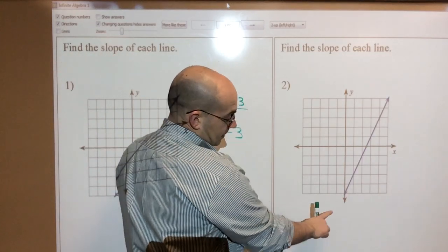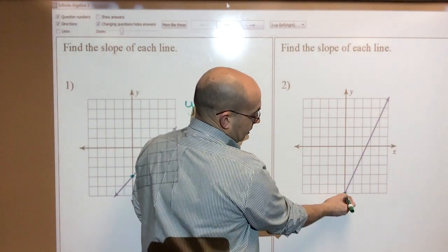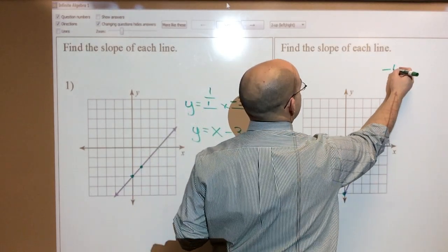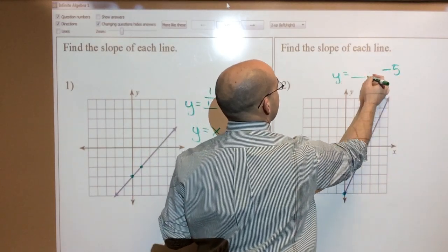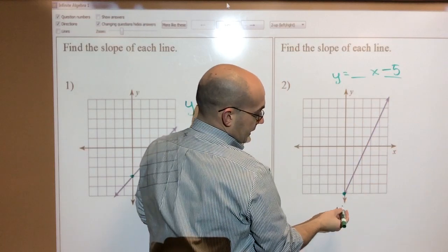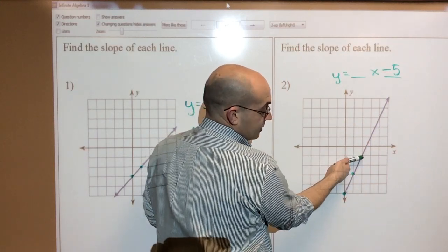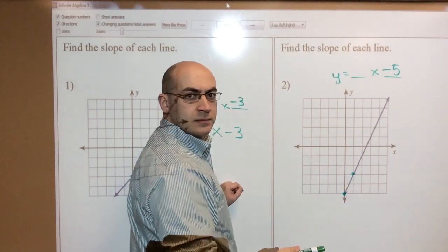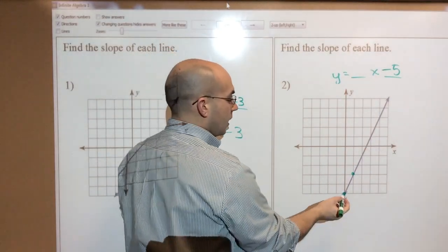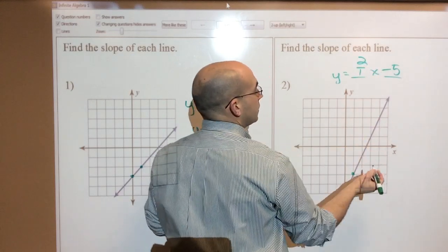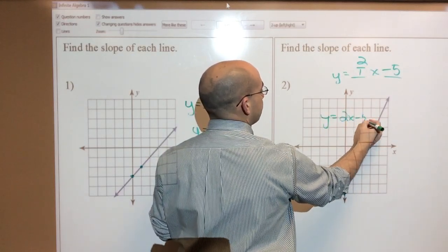Over here, the y-intercept is actually going to be here where this arrow is crossing. And that's going to be at negative 5. So the y-intercept is negative 5. And so y equals blank x blank. And I need to find another good point. Well, there's a couple. That's a good point. I could have used that one too. It doesn't matter. Up 1, up 2 to the right one. So 2 over 1.